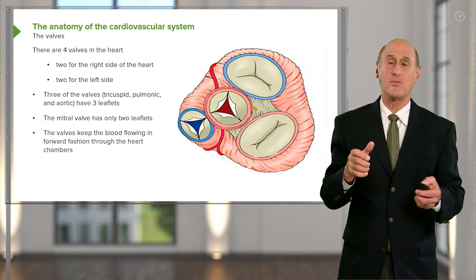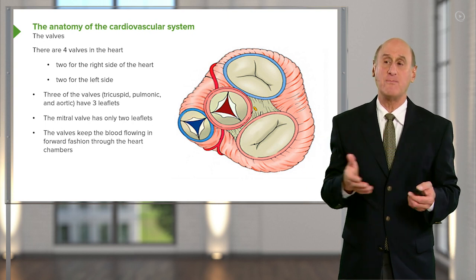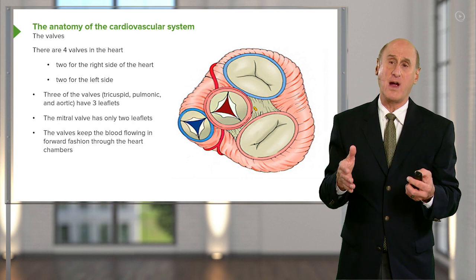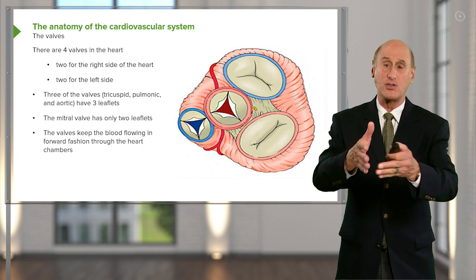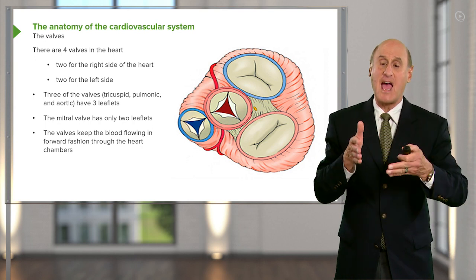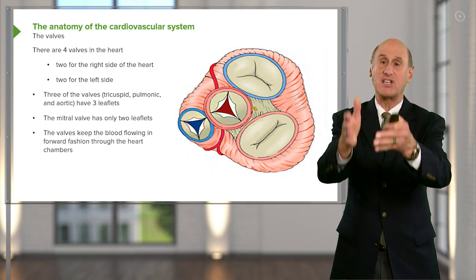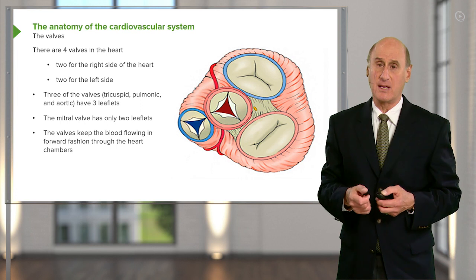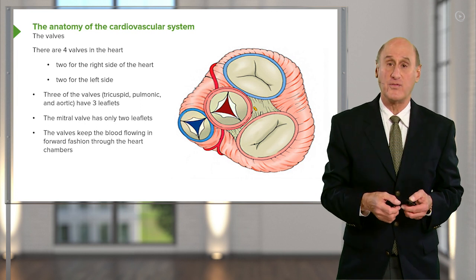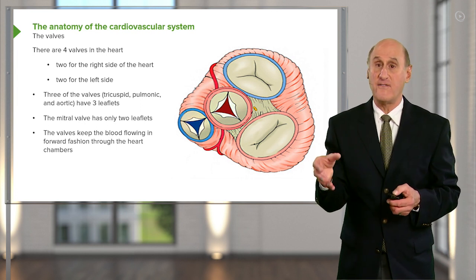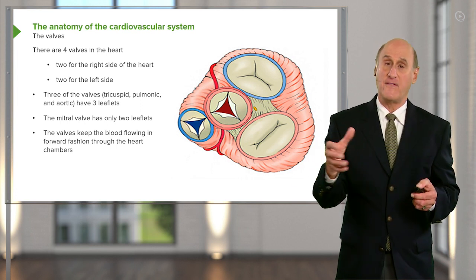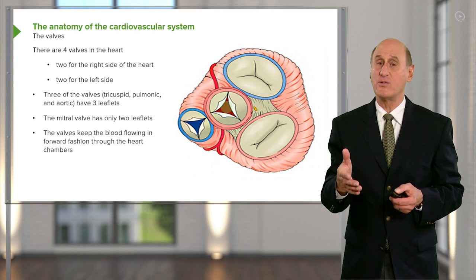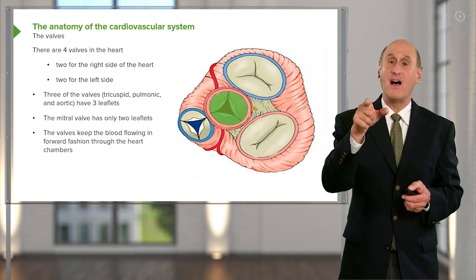In fact, it resembles — it's named for the bishop's mitre, which is the crown that the bishop wears in the Catholic Church, which basically has just two sides to it, resembling a little bit the mitral valve. Once the blood is in the left ventricle, the left ventricle contracts, and the blood goes out the aortic valve.